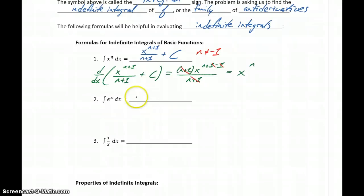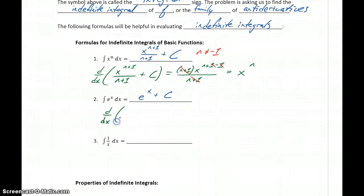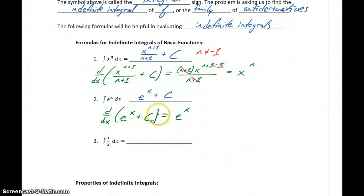The integral of e to the x dx will just be e to the x plus some constant C. We can verify this by taking the derivative of this expression: the derivative of e to the x is just e to the x, and the derivative of C is 0, so we've returned back to the function we started with.